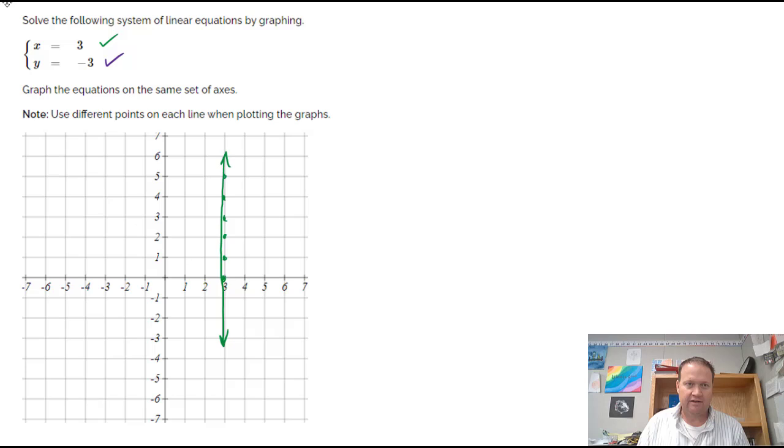And I'll draw y equals negative 3 in this purple line. Y is negative 3 is down 3, that's also down 3, that's also down 3, and there's y equals negative 3. And you can see where the ordered pair is that they're going to cross or intersect, and that is over 3 and down 3. So the solution is at 3 comma negative 3.